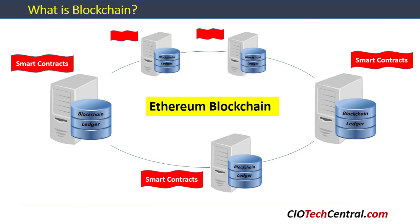Similar to the ledger, smart contracts also have to be mirrored across nodes to ensure the integrity of the overall blockchain database and the business logic that drives it. You can watch other videos or read articles on CIOTechCentral.com covering various topics on Bitcoin and blockchain.